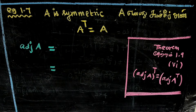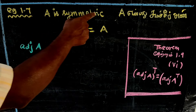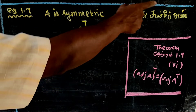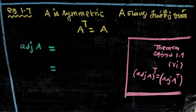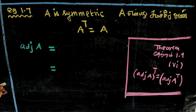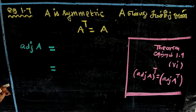If A is symmetric, that means A transpose is equal to A.